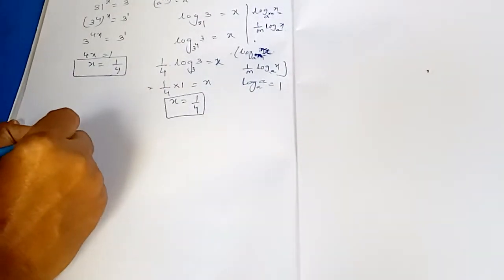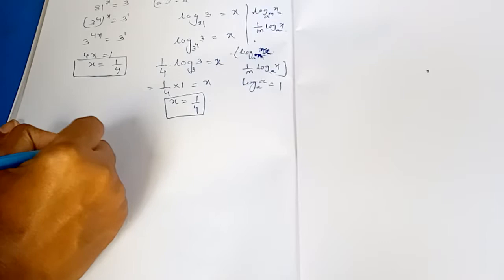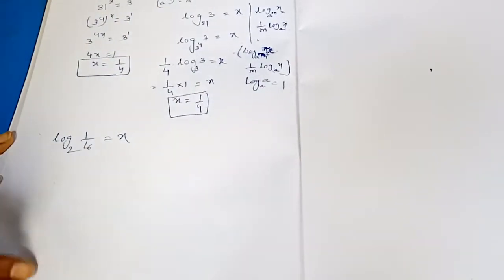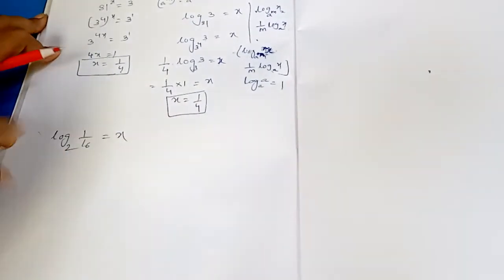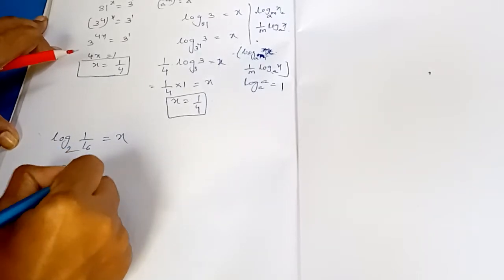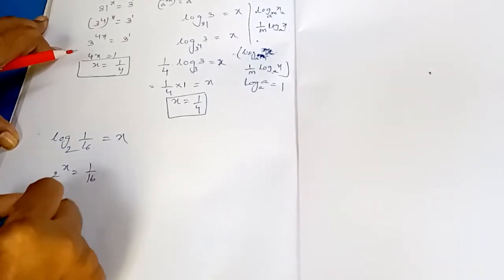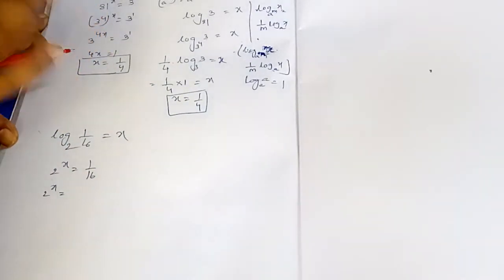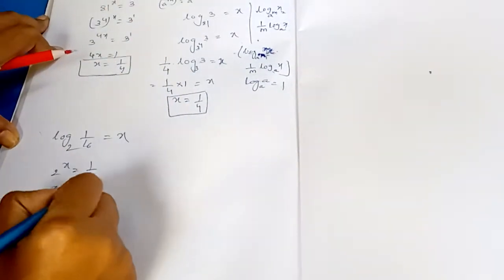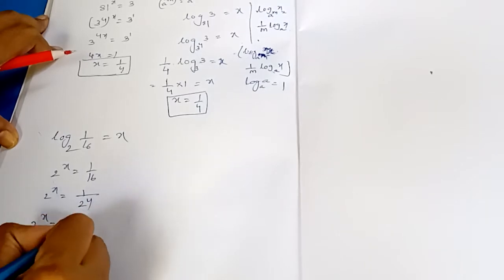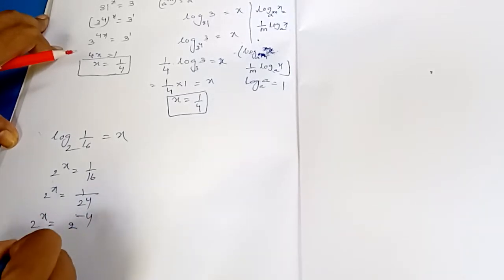Now let us do one more example: find the value of log (1/16) to the base 2. Using the exponent form: base is 2, so 2 power x equals 1 by 16. Since 16 equals 2 power 4, we have 2 power x equals 2 power minus 4. Bases are equal, so we equate exponents: x equals minus 4.